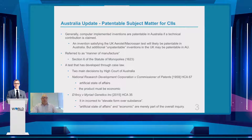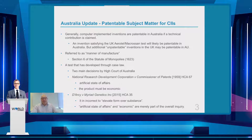There are two main High Court decisions: NRDC versus the Commissioner of Patents and DRCE versus Myriad Genetics. In relation to NRDC, the two main requirements for patentable subject matter are that there must be an artificial state of affairs and that the product must be economic. This decision came down in 1959, and it was a number of years later in 2015 that the High Court clarified that decision, stating that these requirements are merely part of the overall inquiry and that it is incorrect to elevate form over substance — meaning you must take into account the characterization of the invention.